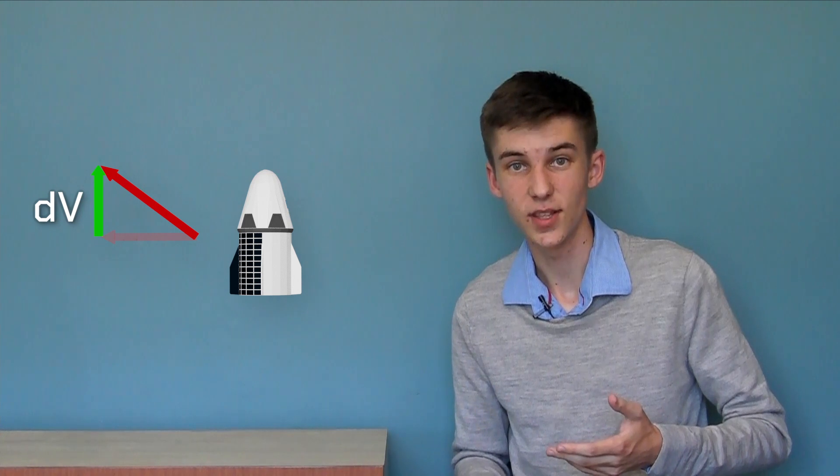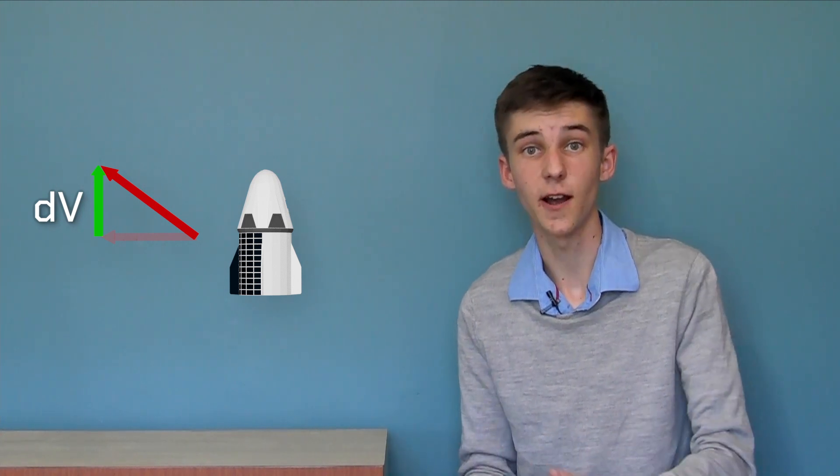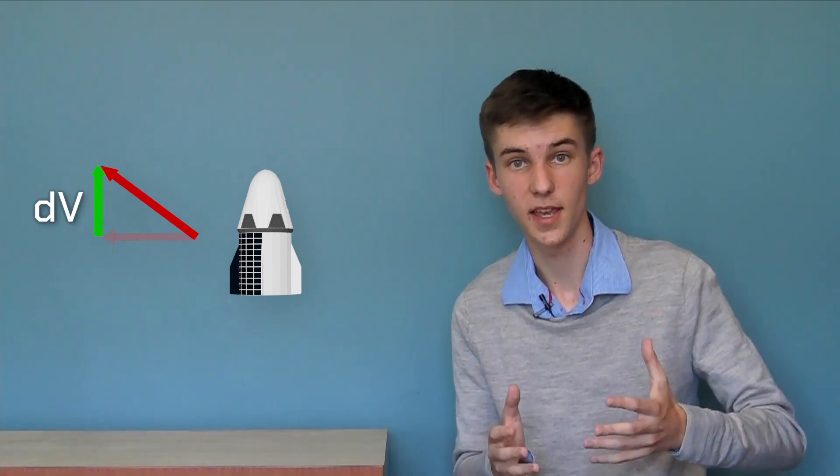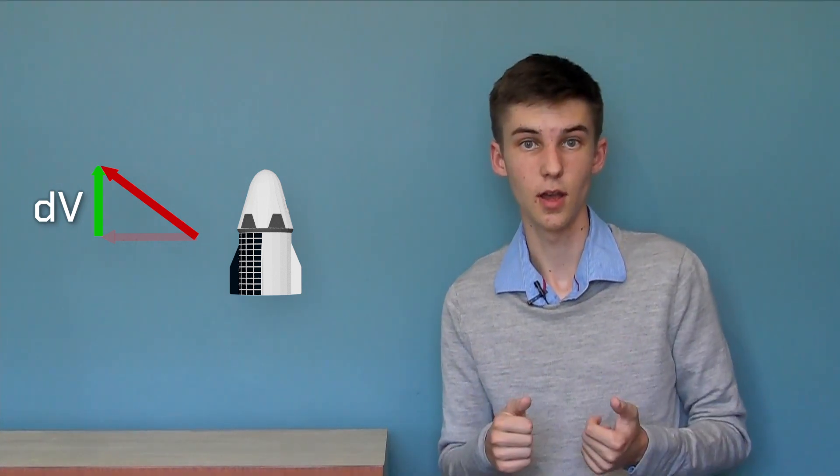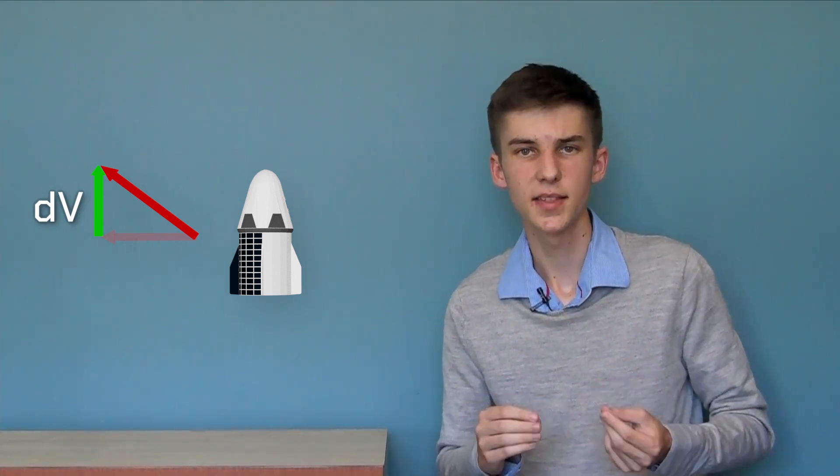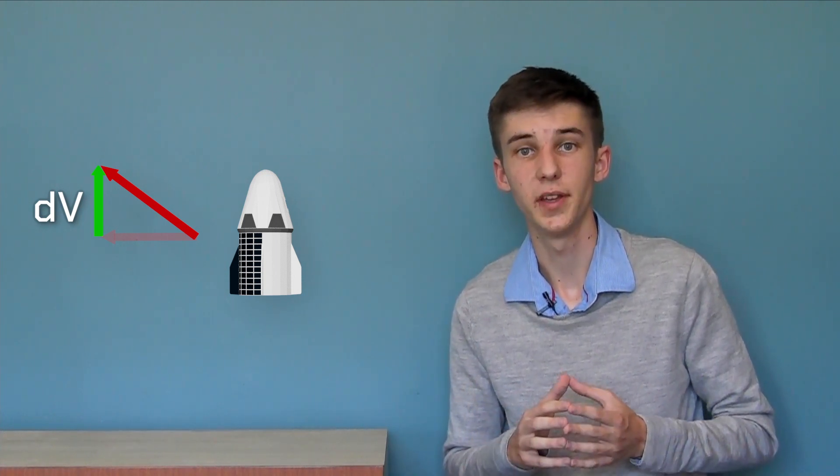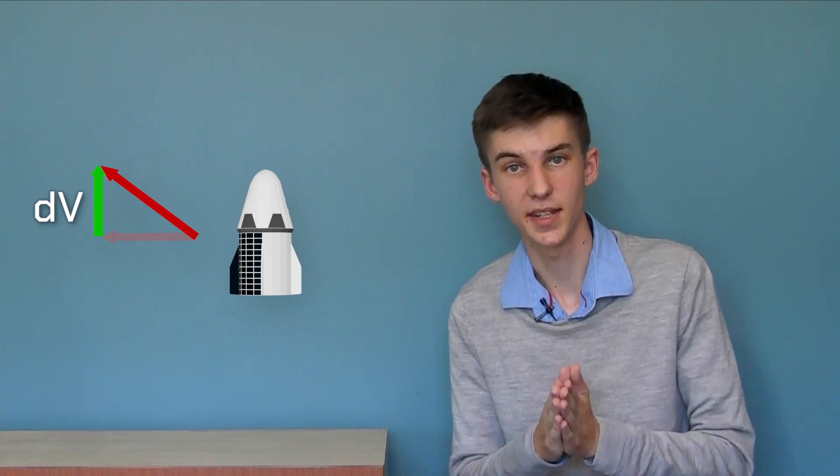However, getting into the inner solar system or really far out into the outer solar system would require a lot of delta V if we were just using rocket engines. As such, we can design our trajectories specifically to take advantage of something called a gravity assist.